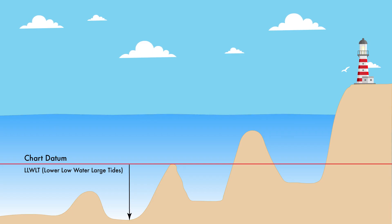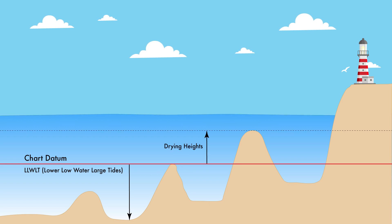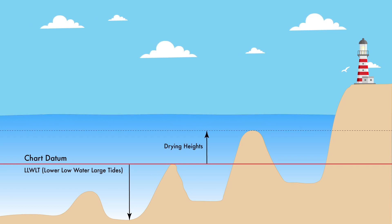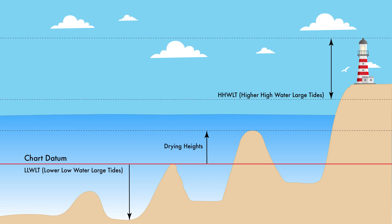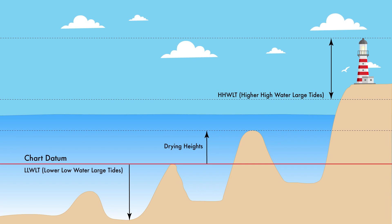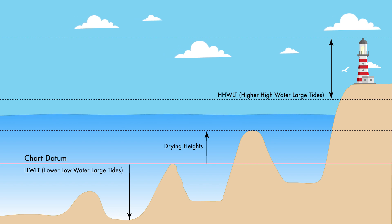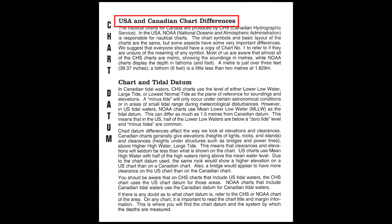Depths are always measured from chart datum. Drying heights are features exposed by the low tide — in other words, the intertidal zone. And once again, in Canada, elevations such as bridge clearances are measured at HHWLT, or the highest of the high tides. Be sure to check the elevation datum for your country.